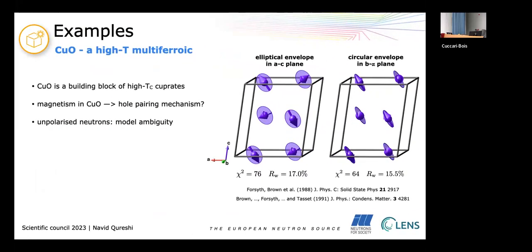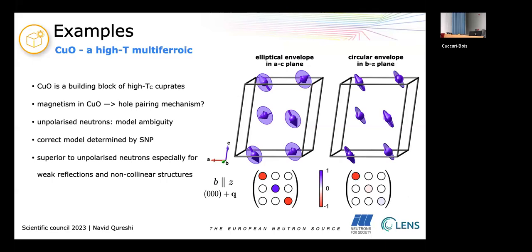But before being interesting as a multiferroic, copper oxide was studied as a building block of high temperature cuprate superconductors and it was expected or hoped that the magnetism in copper oxide would give information about the hole pairing mechanism in the superconductors. So there is an experimental team consisting of more or less the same people which did two studies, one using unpolarized neutrons and another using SNP. And they saw that there's a huge model ambiguity. So those two magnetic structures are profoundly different but they give more or less comparable agreement factors. And it's only by using SNP that they could tell the difference between the different magnetic structures by measuring the polarization matrix on one reflection. They saw that it's completely different for the two models and they could say that this is the correct one. So that showed the superiority to unpolarized neutrons especially if you have weak reflections which is the case for copper and in this case also complex non-collinear structures.